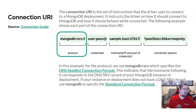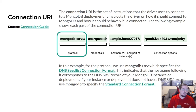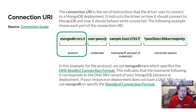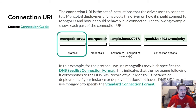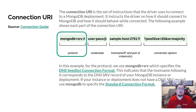Before we talk about how to break that up and make it more generic, let's talk quickly about the connection URI or the connection URL. The connection URI is a set of instructions that the driver uses to connect to a MongoDB deployment — it instructs the driver how it should connect to MongoDB and how it should behave while connected. Some of those parts we didn't see in the previous example because they're optional.